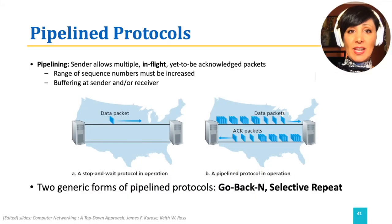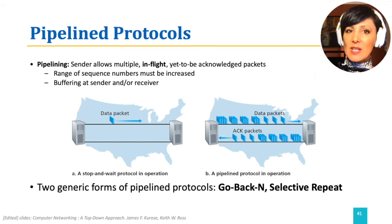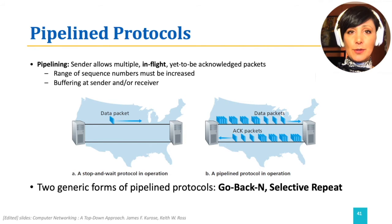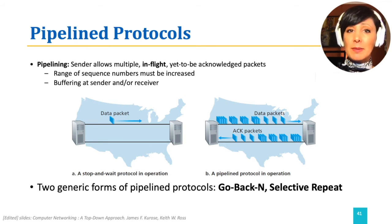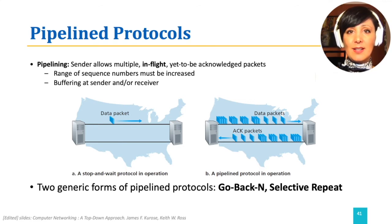We need two things to make pipelining happen: more numbers used for sequence numbering of the packets, and buffering at the sender and receiver. We are going to discuss two generic forms of pipeline protocols that can help us achieve this: Go-Back-N and Selective Repeat.